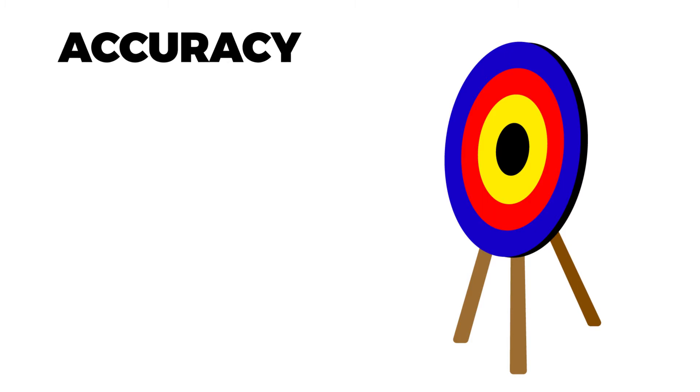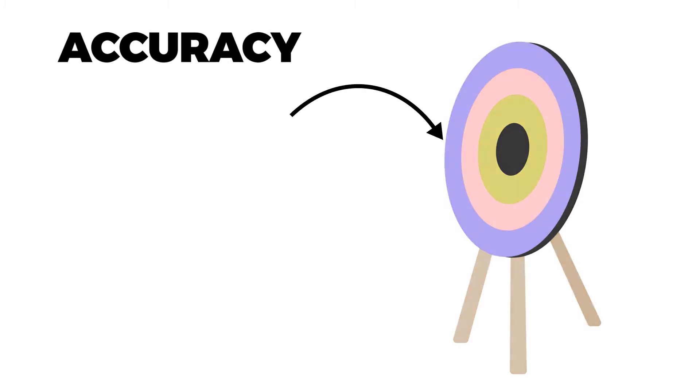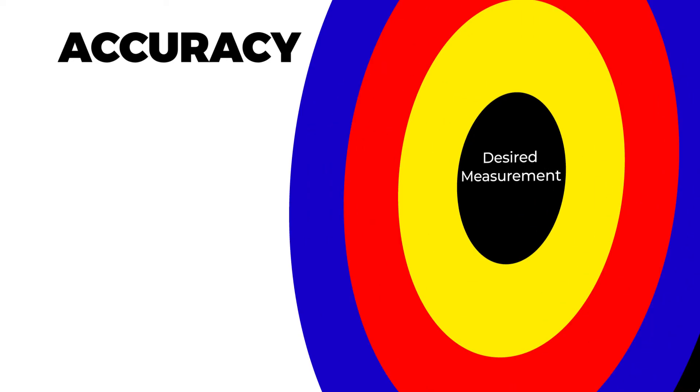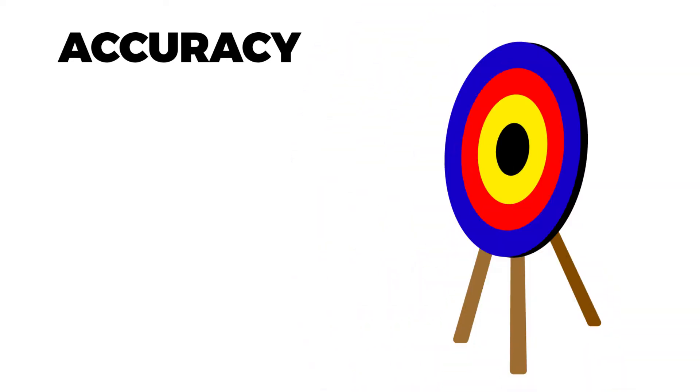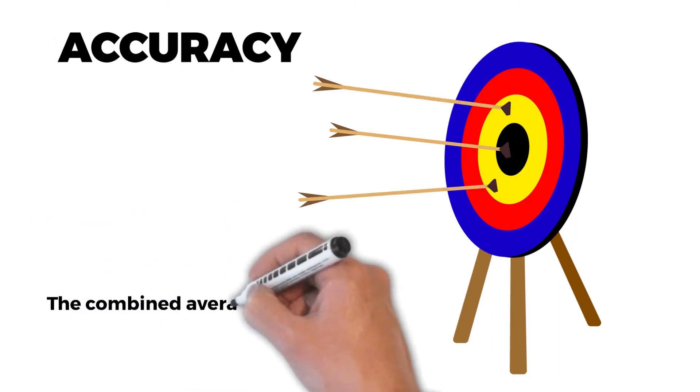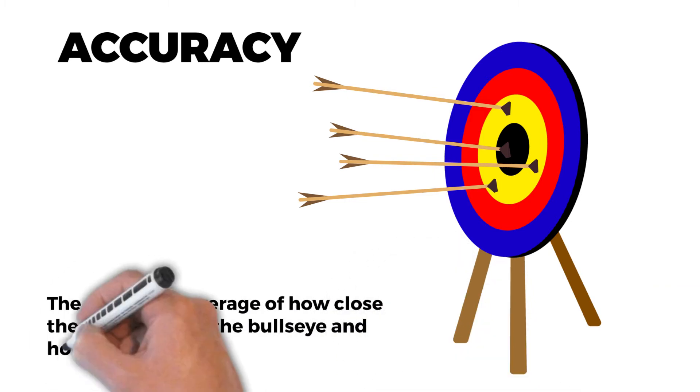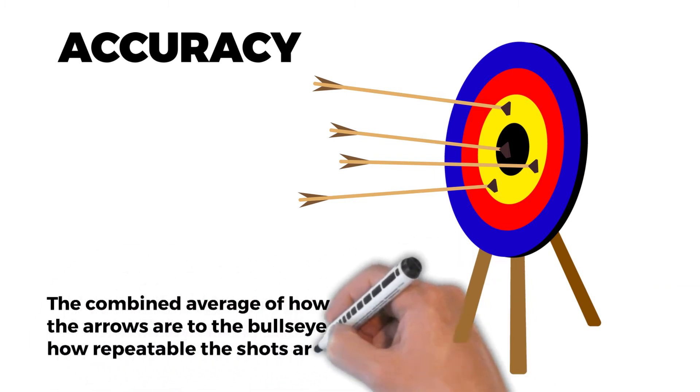Accuracy is often explained using the analogy of a target, where the target represents the specification limit. The bullseye is the desired measurement and accuracy is how close the arrow comes to the bullseye. When multiple arrows are shot, accuracy is the combined average of how close the arrows are to the bullseye and how repeatable the shots are.